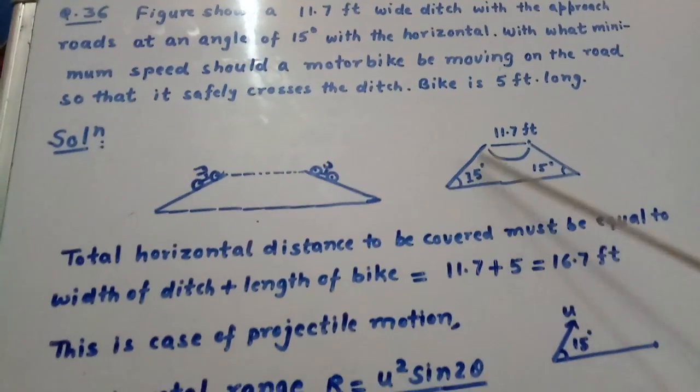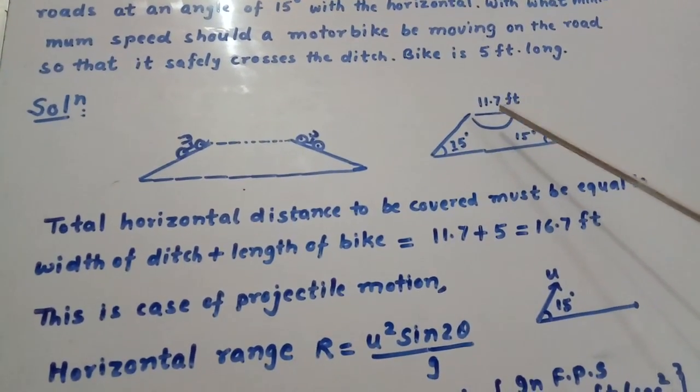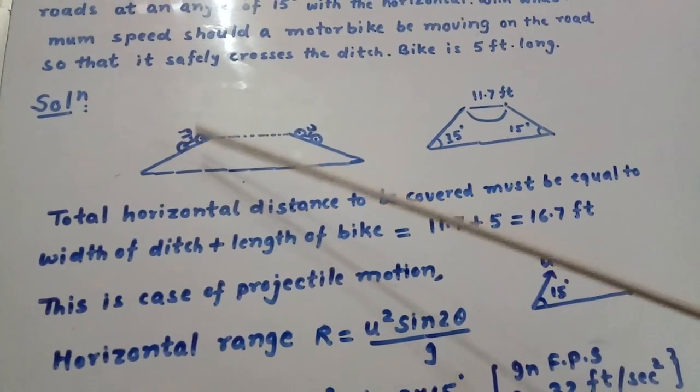The diagram is shown. This is the approach road at 15 degrees and this is the 11.7 feet wide ditch. The diagram is redrawn with the bike here.